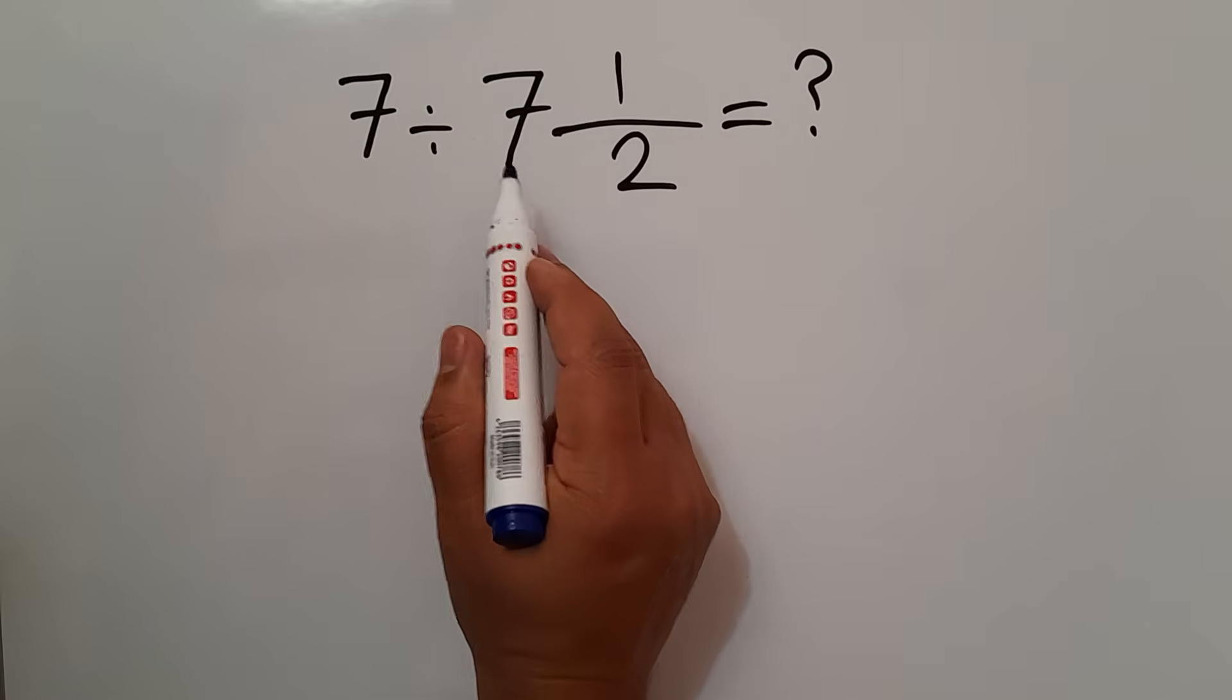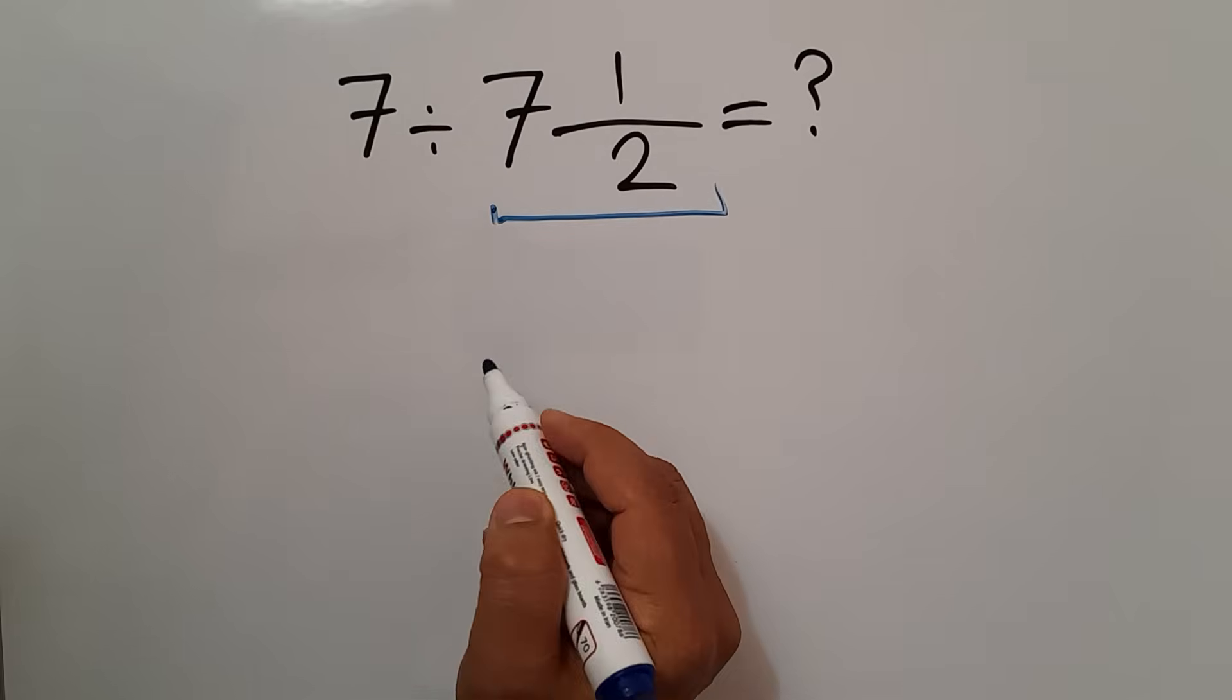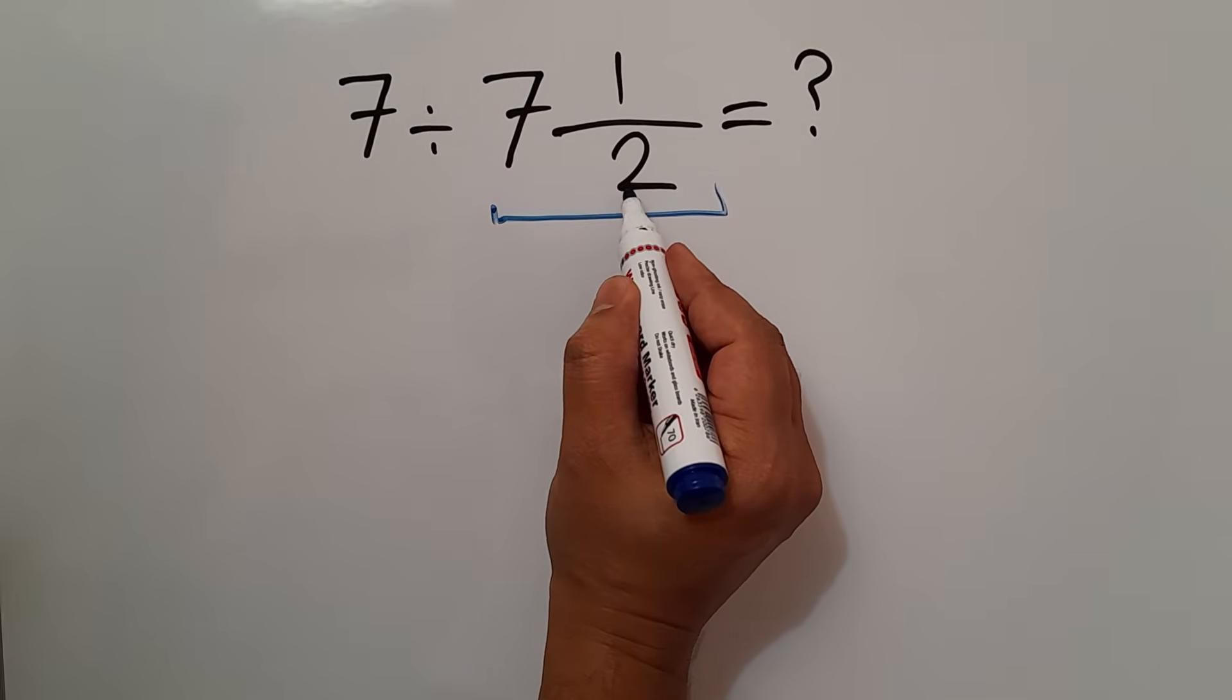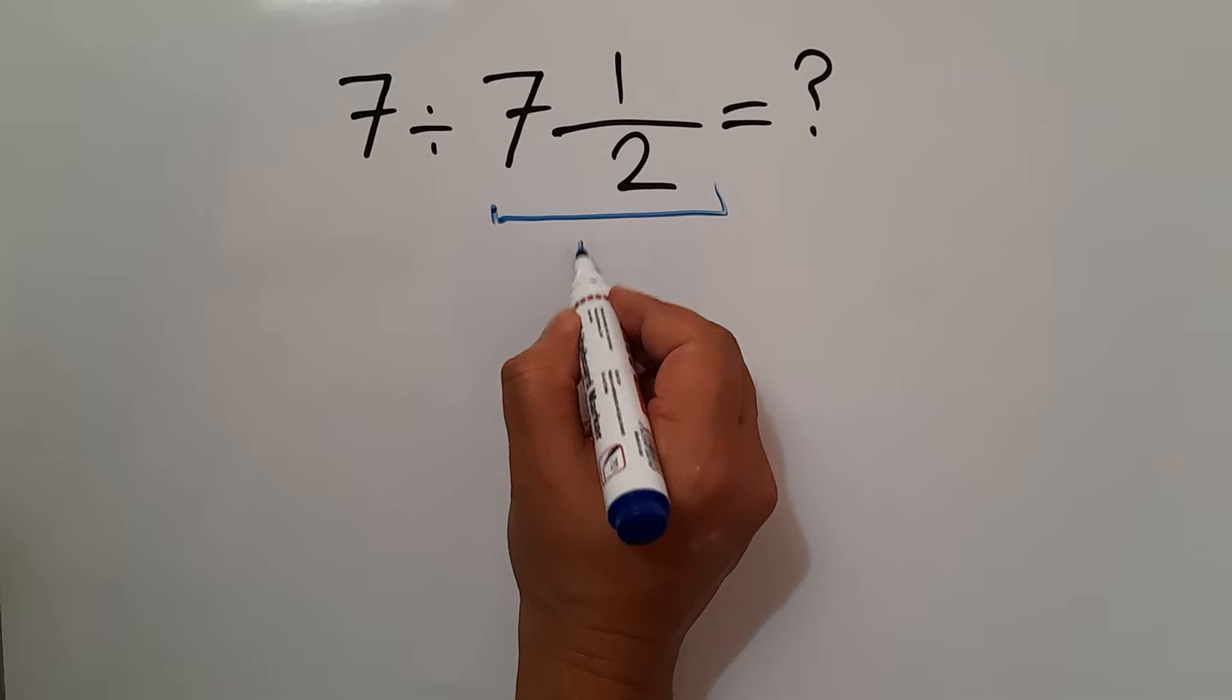First of all, let's convert this mixed number to an improper fraction. 7 times 2 gives us 14, and 14 plus 1 gives us 15.